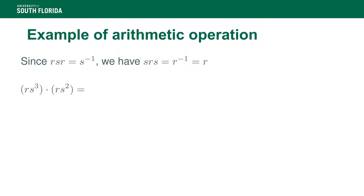Let's give an example of a multiplication of two elements. We need to land back on an element of the form r or nothing times s to a certain power between 0 and n minus 1. Now, s and r satisfy the given relationship. We immediately see that s times r times s equals r inverse, which of course equals r.